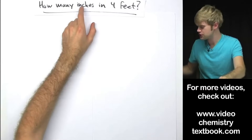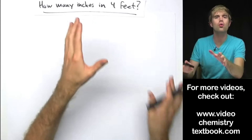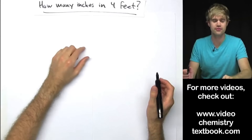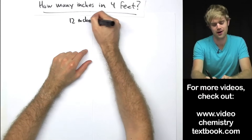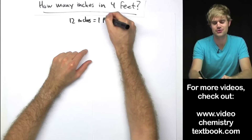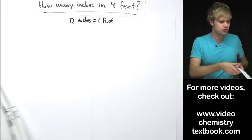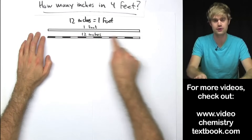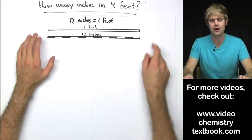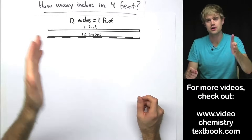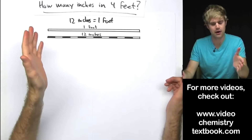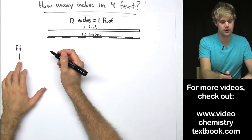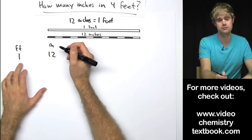Here we want to find out how many inches are in 4 feet. In order to do this, we'll need to know a relationship that ties inches with feet. You probably already know that there are 12 inches in 1 foot, and I've drawn this out so you can have a look at it visually. Here's 1 foot and here are the 12 inches. Now, how do we go from feet to inches? Let's just think about it. If you have 1 foot, you're going to have 12 inches.